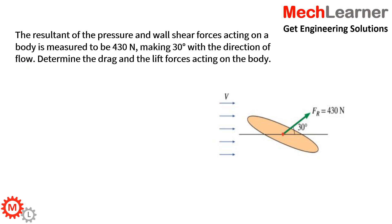In this question, the resultant of the pressure and wall shear force acting on a body is measured to be 430 N. This 430 N resultant force acts on the body and makes an angle of 30 degrees with the direction of flow. We have to calculate the drag force and the lift force.